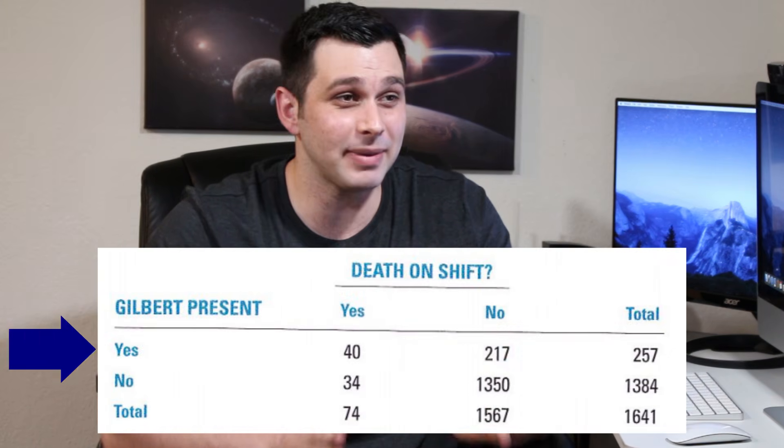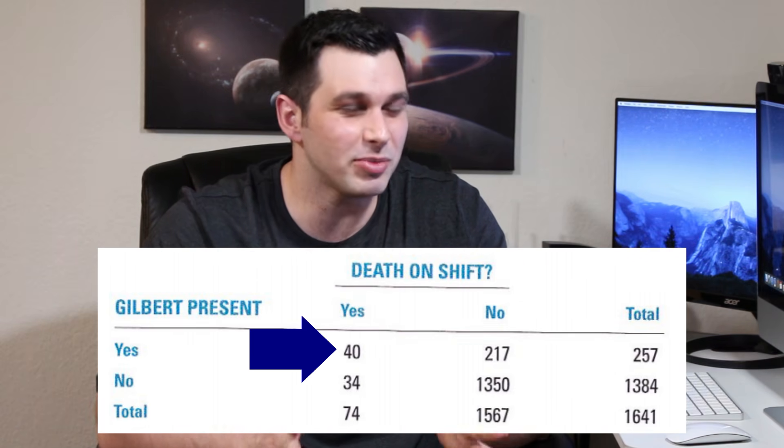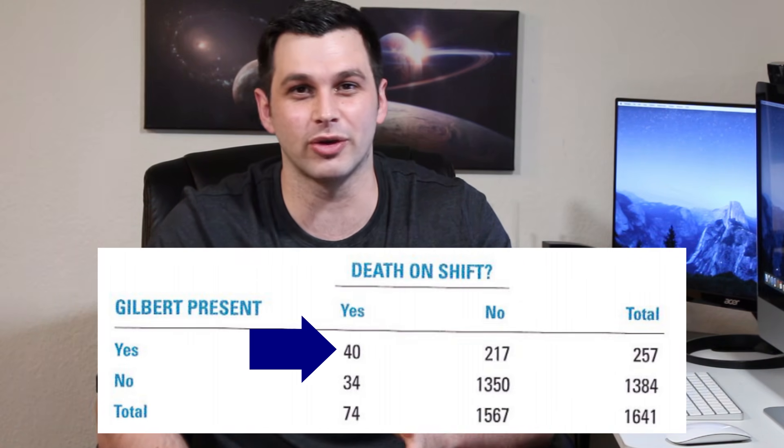And they compared these numbers to see if there was an obvious difference. If one or two more deaths happened on her watch, that could just be a coincidence. It doesn't prove anything. So, how many more deaths would need to occur for us to have sufficient evidence that something criminal was going on?